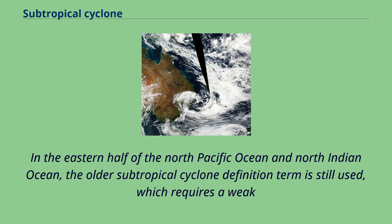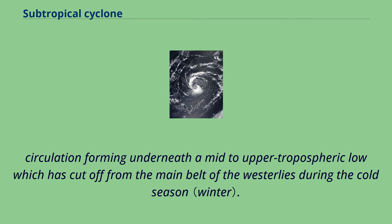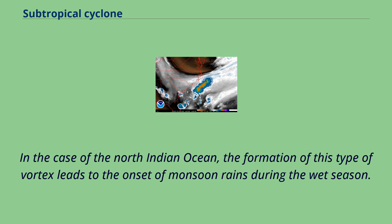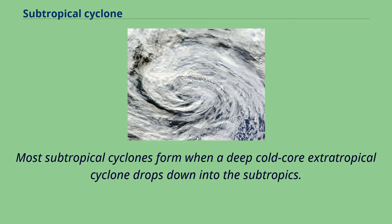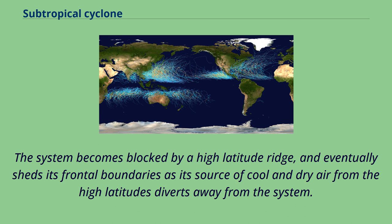In the eastern half of the North Pacific Ocean and North Indian Ocean, the older subtropical cyclone definition is still used, which requires a weak circulation forming underneath a mid- to upper-tropospheric low cut off from the main belt of the westerlies during the cold season. In the case of the North Indian Ocean, this type of vortex leads to the onset of monsoon rains during the wet season. In the southern hemisphere, subtropical cyclones are regularly observed across southern portions of the Mozambique Channel. Most subtropical cyclones form when a deep cold core extratropical cyclone drops down into the subtropics, becomes blocked by a high latitude ridge, and eventually sheds its frontal boundaries.